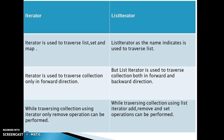The first and foremost difference is iterator is used to traverse list, set and map. We can iterate all the collections — list, set and map — using iterator, but using list iterator we can iterate only collections which implement list. Using list iterator we can only traverse through the list.